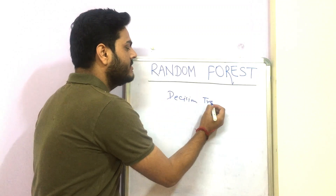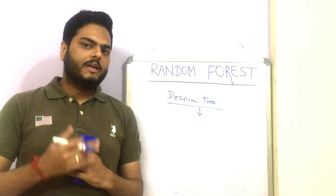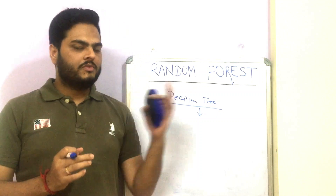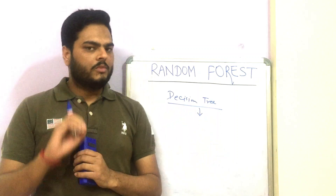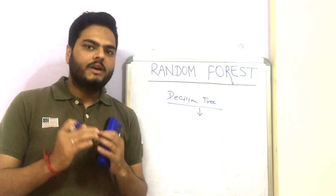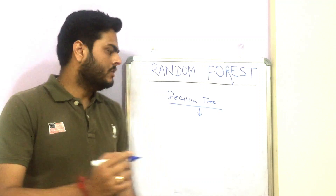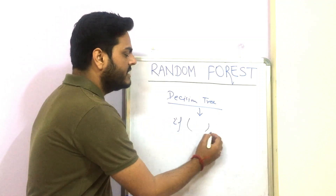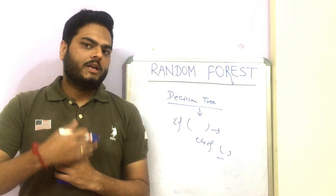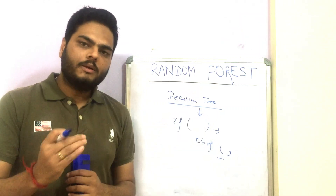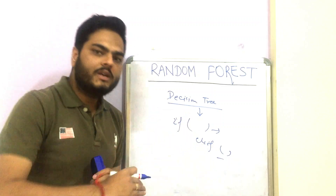The first thing to understand is the advantages and disadvantages of decision trees. The advantage of decision trees is they are easy to understand, easy to train, and easy to interpret, because a decision tree works on a nested if-else condition — if this condition then this happens, else if this condition then this happens. Model training happens through nested if-else statements.